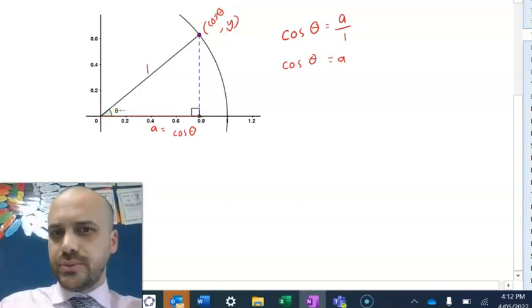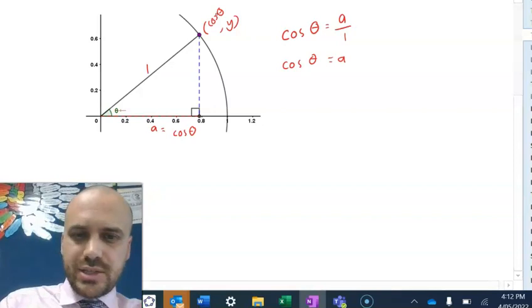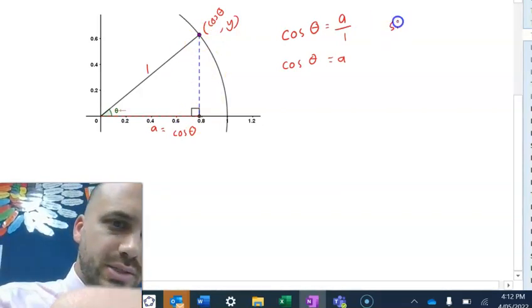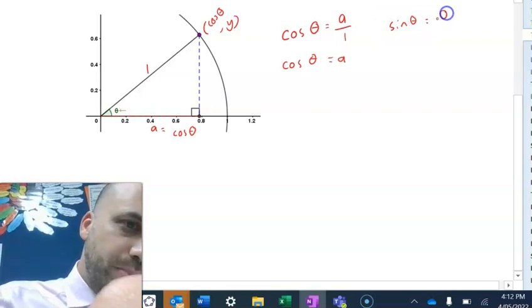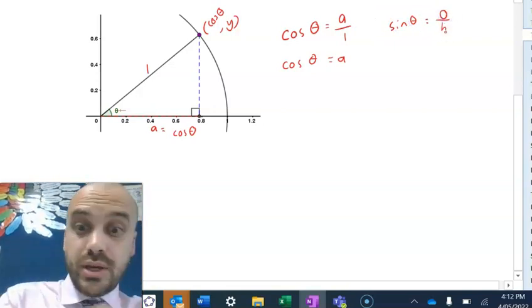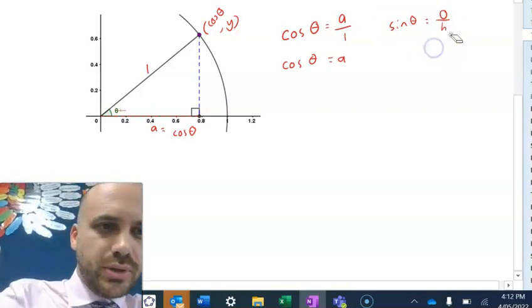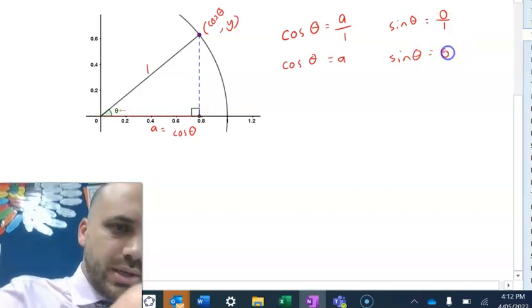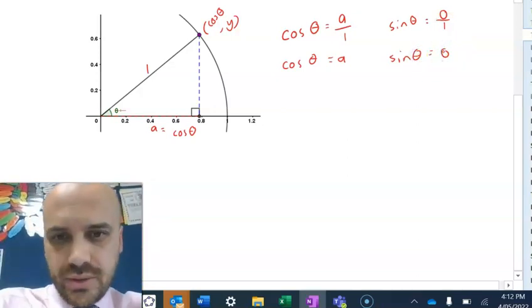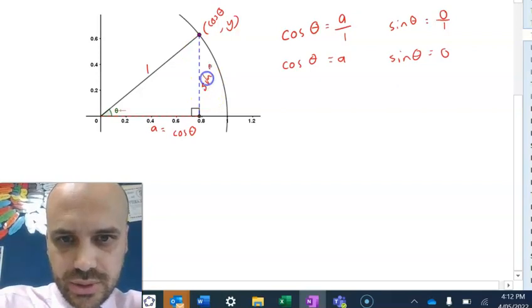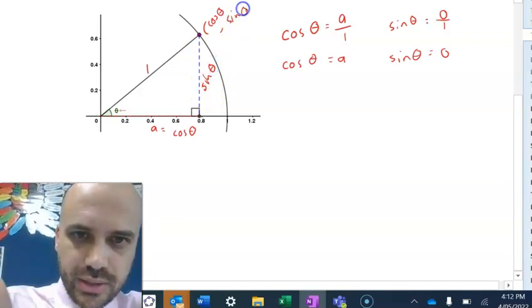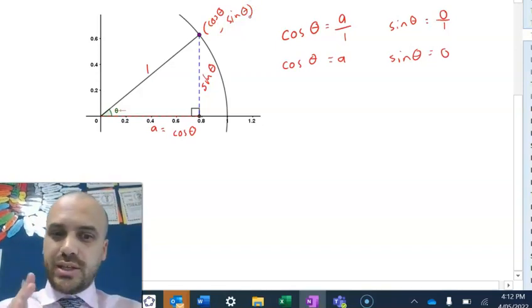Now we can do an identical thing with this blue line here. We can say that sin theta equals opposite over hypotenuse. Following the same logic, this blue length is equal to sin theta, which means that this y coordinate equals sin theta.